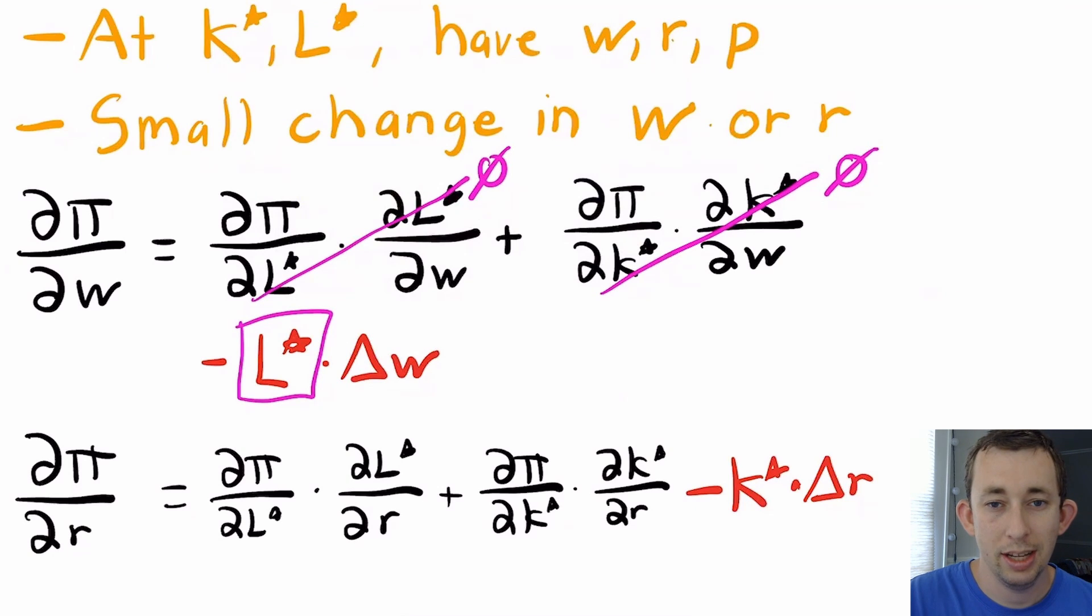Similarly, you can do the same for ∂π/∂r to get K*. The indirect effect through labor is zero because I don't care how profit changes through labor via the rental rate. Same for capital.